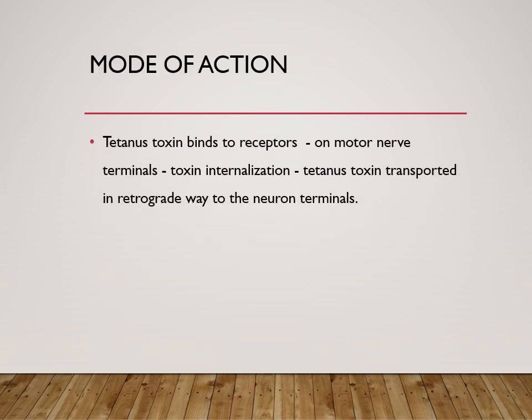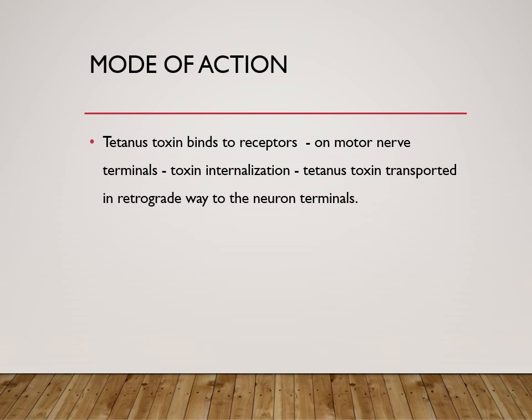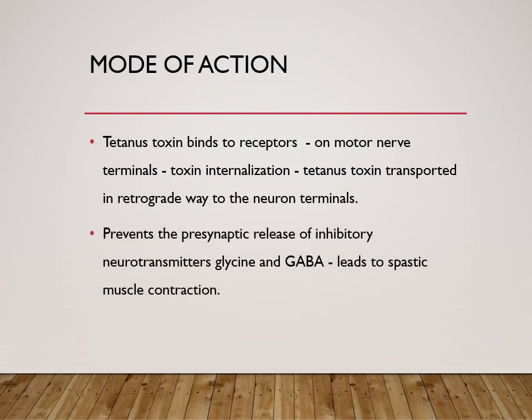Now, how does it work? The tetanus toxin binds to receptors on the motor nerve terminal. The toxin will get internalized and then transported in a retrograde way to the neuron terminals. There it prevents the release of inhibitory neurotransmitters — glycine and GABA — which are very important for muscle relaxation. When these inhibitory neurotransmitters are blocked, there is continuous firing of neurons, leading to muscle contraction and spasm.